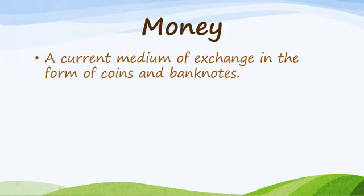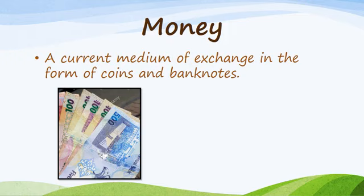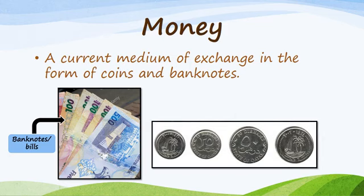So money: a current medium of exchange in the form of coins and banknotes. So I have here a picture. This picture shows banknotes or bills. Banknotes or bills are money that are in a paper form. They have their value like 500, 100, and 50. So on the other picture, we will show the coins. Coins are circled and they are made up of metal. Coins have smaller value than banknotes or bills.